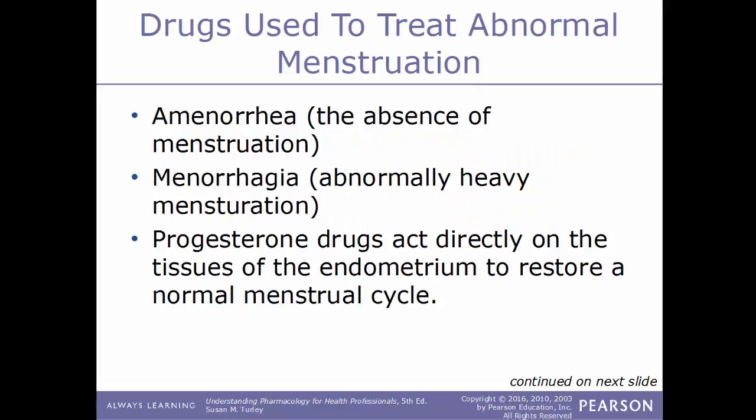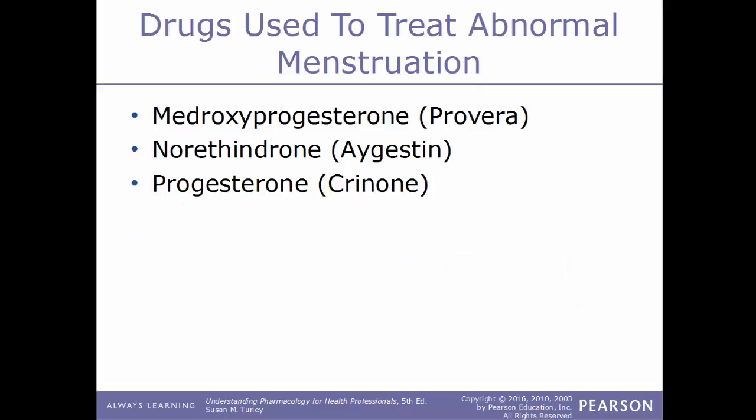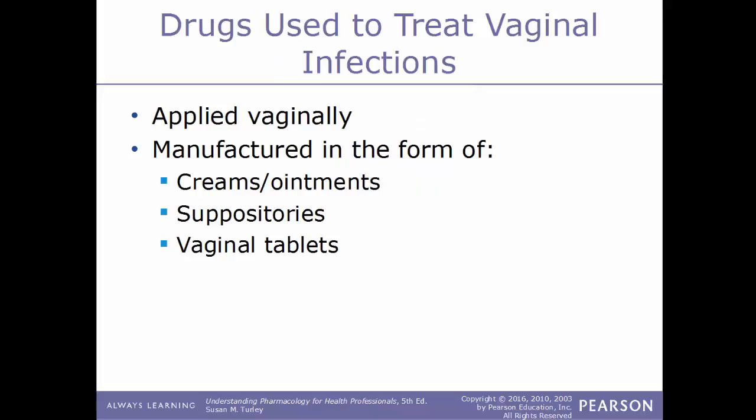Drugs used to treat abnormal menstruation — such as amenorrhea (absence of menstruation) and menorrhagia (abnormally heavy menstruation) — include progesterone drugs that act directly on the tissues of the endometrium to restore a normal menstrual cycle. Examples include medroxyprogesterone (Provera), norethindrone (Aygestin), and progesterone (Crinone).